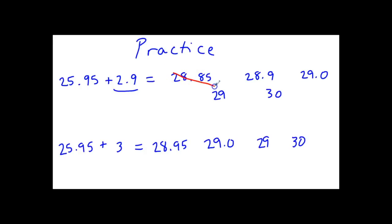28.85 has two, so you can mark that one out. 28.9 has one, so that is a possible answer. 29.0, 29 and 30. We can eliminate 29 and 30 because they have no digits past the decimal.